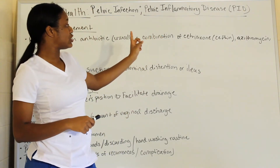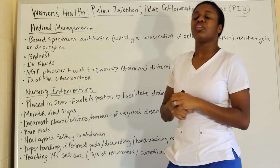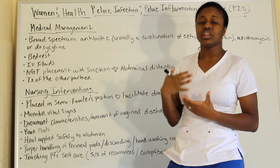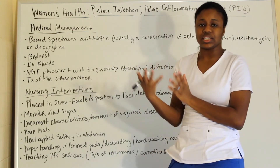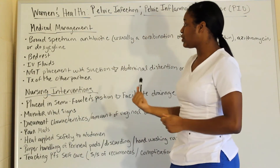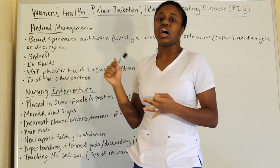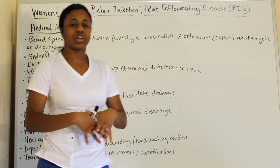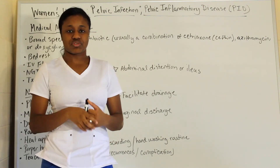Medical management includes broad-spectrum antibiotics such as erythromycin, ceftriaxone, or doxycycline. Vaginal discharge is cultured so that a more specific antibiotic can be used once results return. Treatment also includes bed rest, IV fluids, and possibly a nasogastric tube (NGT) with low intermittent suction if the patient has an ileus — meaning absent bowel sounds and no GI movement.